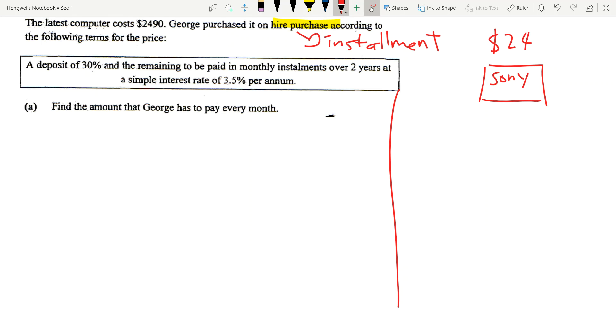Now how much do you need to pay to bring this laptop home? You only need to pay the deposit of 30%. So what happens to the other 70%? The shopkeeper is not just going to let you pay 30% and bring it home because the shopkeeper needs the money to run his business. So 70% you need to go and borrow it from the bank.